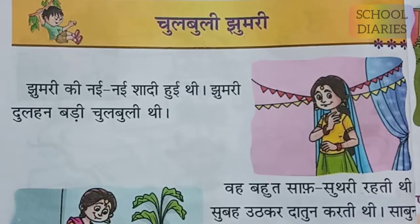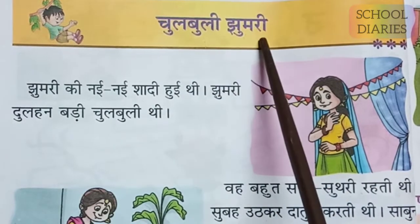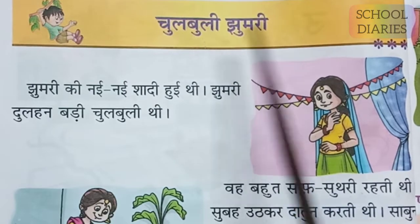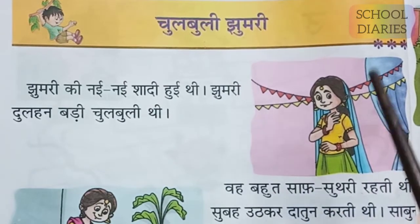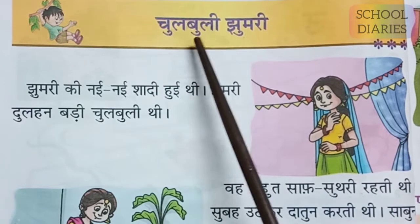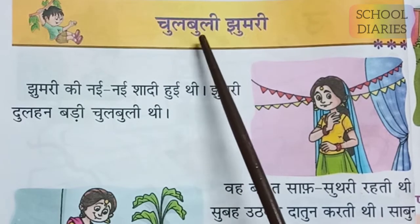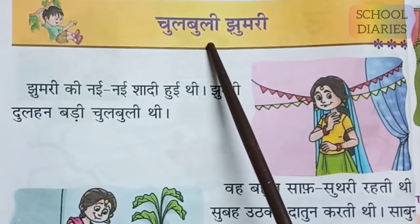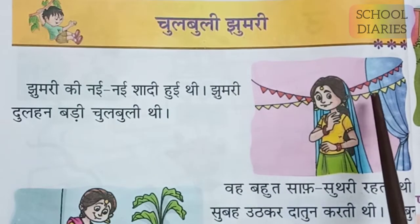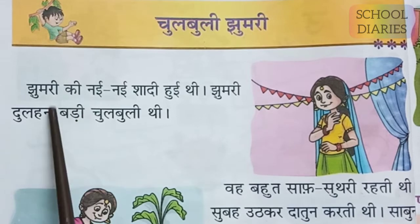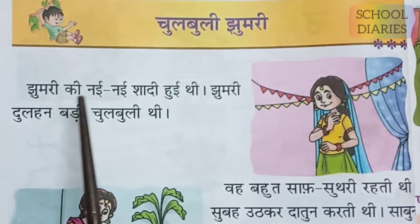Now let's go to our chapter. The name of the chapter is Chulbuli Jhumari. Jhumari is the name of a girl, and she was very chulbuli — meaning she was very naughty, very bubbly, and very cute. So this chapter is about her. Let's start reading the lesson.